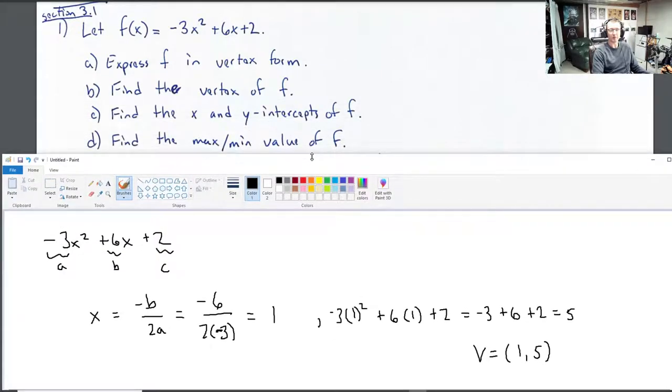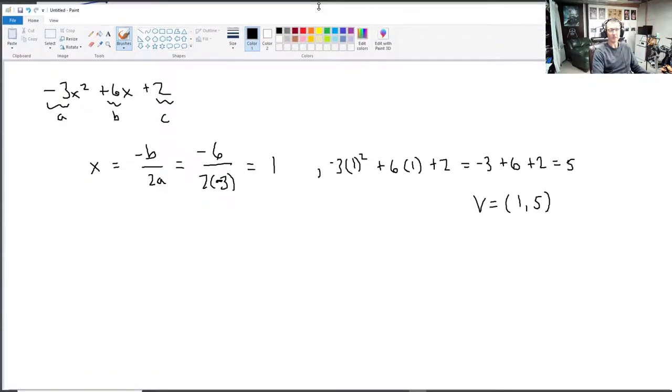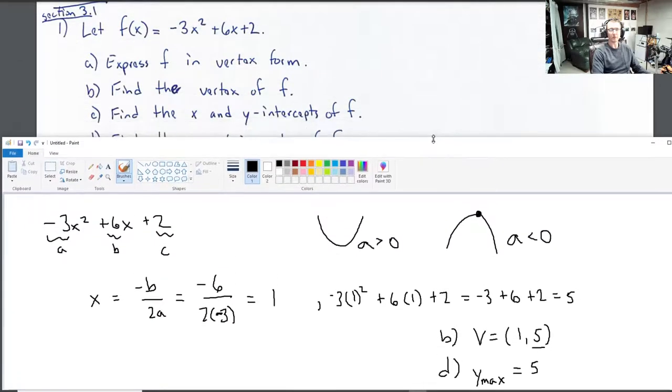Now I'm going to do part d. Find the max min value of f. It's either a maximum or a minimum. Remember, a parabola looks like this if the leading coefficient a is positive, or it looks like this in the case where a is negative, which is the case for us. We have a negative 3 for a, so our parabola looks like an upside down cup, like a frown face. This point here is the vertex right in the middle, and it takes the maximum value. So the max value, y maximum equals 5. That's the y coordinate of the vertex.